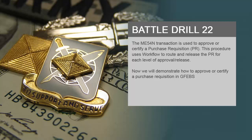The ME54N transaction is used to approve or certify a Purchase Requisition. This procedure uses workflow to route and release the PR for each level of approval release. Now we will demonstrate how to approve or certify a Purchase Requisition in GFIBS.